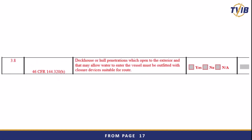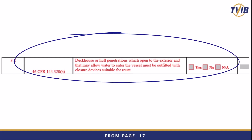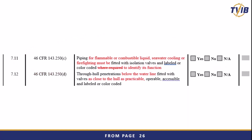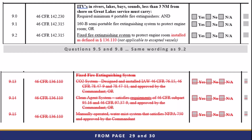Here we talk about deckhouse or hull penetrations which open to the exterior and may allow water into the vessel. This has been a common finding and we wanted to amplify the information and articulate it on the survey report. We've also taken time to closely match what the CFR was actually saying — this is almost verbatim of that citation. For flammable or combustible liquid, seawater cooling, firefighting isolation valves: their installation, whether they are labeled, what their function is, and whether they are identified for the crew. As well as through-hull penetrations below the waterline, making sure they're as close to the hull as practical and operable and accessible. For questions 9.2, 9.5, and 9.8, we've minimized what was being captured — everything in the redline version is defined in 46 CFR 136.110, captured as installed. This applies to ITVs and lakes, bays, and sounds less than or greater than three nautical miles.